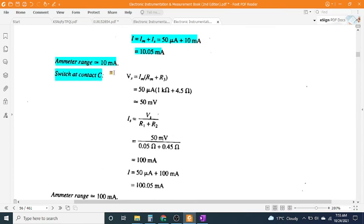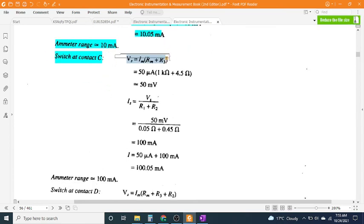Switch at contact C: V_M = I_M × (R_M + R_1) = 50 μA × (1 kΩ + 4.5Ω) = 50 mV.